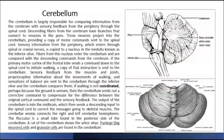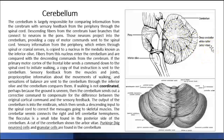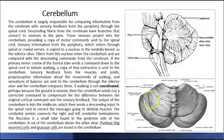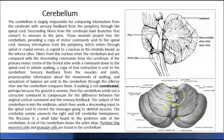The cerebellum is behind the brain stem, below the brain. A cross-section of the cerebellum shows internal structures called the arbor vitae, which look like little branches of a tree. The outside of the cerebellum has lobes: the anterior lobe and the posterior lobe. It also has a left hemisphere and a right hemisphere, connected by the vermis.